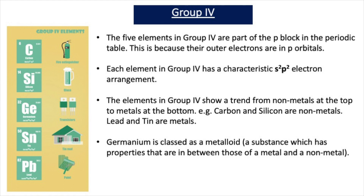The elements in group 4 show a trend from non-metals at the top to metals at the bottom. For example, carbon and silicon are non-metals, while lead and tin are metals. Germanium is classed as a metalloid because it's a substance which has properties that are in between those of a metal and a non-metal.